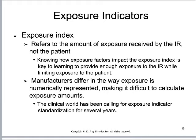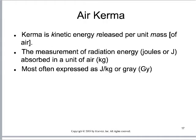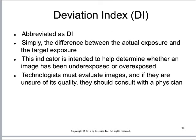Manufacturers differ in how exposure is numerically represented, and we've been asking for a clinical standard exposure indicator for a long time without one yet. We are working towards something called a deviation index, which will help us have a standardized exposure indicator. To understand the deviation index, we first need to talk about air KERMA — kinetic energy released per unit mass of air. This measures the amount of radiation energy or work done in a volume of air, often expressed as joules per kilogram or simply the unit gray. We use KERMA to track the actual exposure at the image receptor versus what we expected, calculating the deviation index — how much the actual exposure differed from the expected exposure.